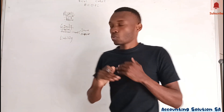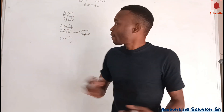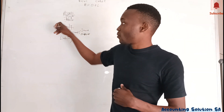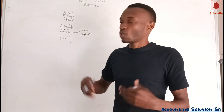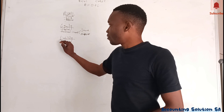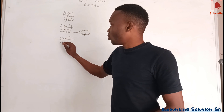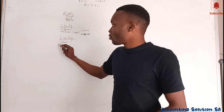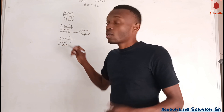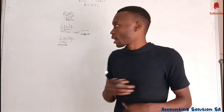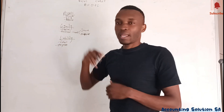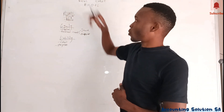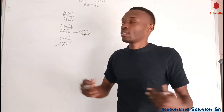Once you face an income or expense, you have to use the equity account. For liability, we can have something like a loan or payables. You also need to check other examples that fall under liability.